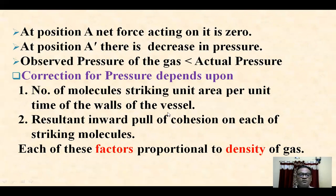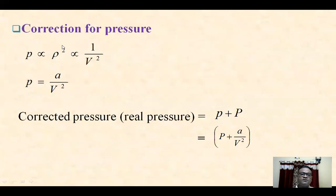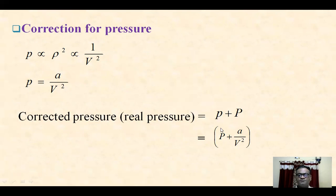The correction for pressure depends upon the number of molecules striking unit area per unit time on the walls of the vessel. Each of these factors is proportional to the density of the gas, because the number of molecules depends on the density. So the correction for pressure, small p, is proportional to density squared, which is inversely proportional to volume squared. So small p equals a upon V squared. Therefore the corrected real pressure is capital P plus a upon V squared.